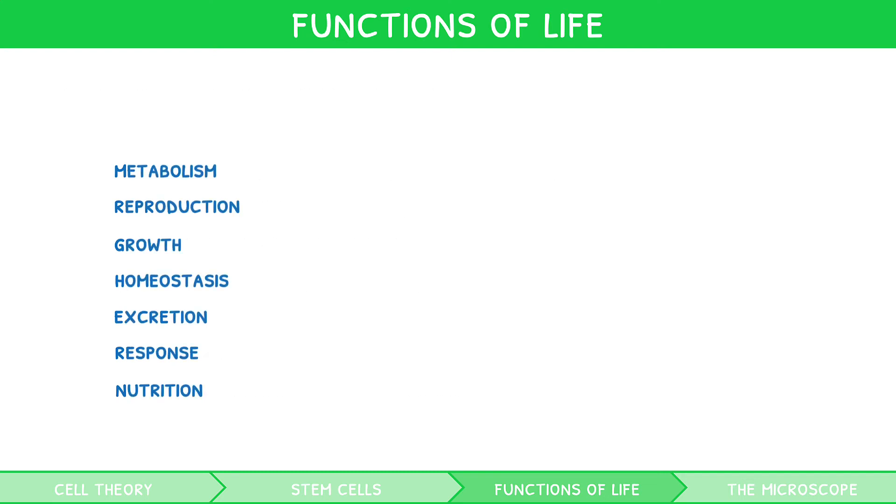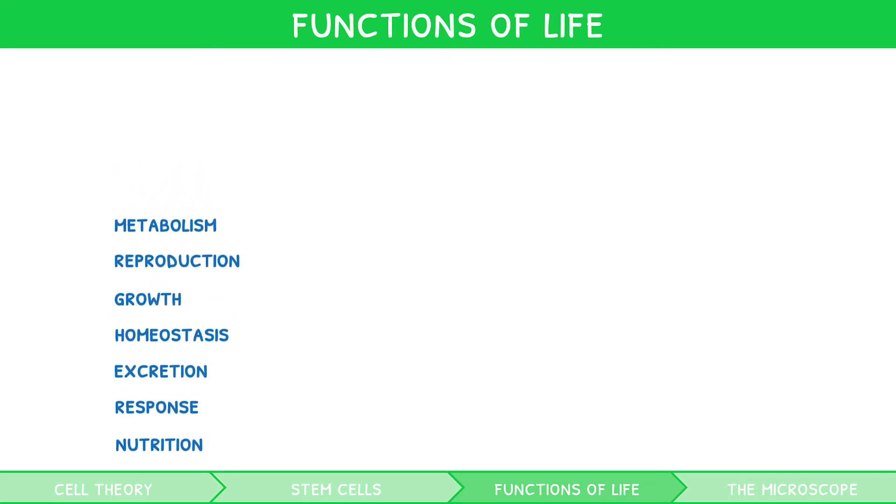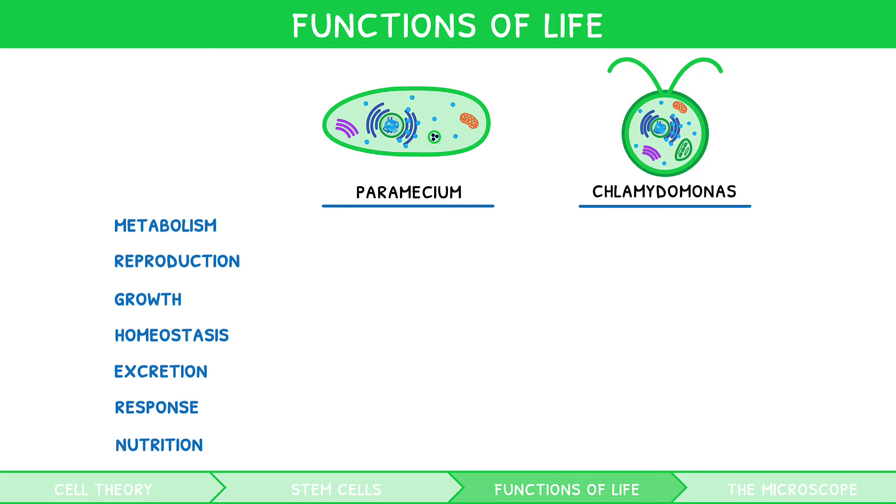The IB syllabus expects you to be able to complete two different examples in relation to these functions of life. Let's look at the examples of paramecium, a heterotroph, and chlamydomonas, an autotroph.